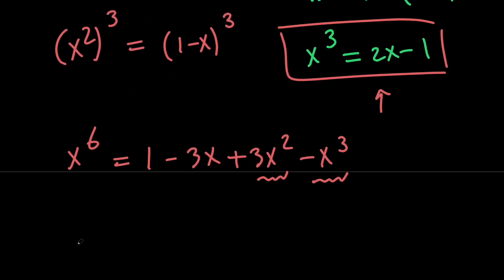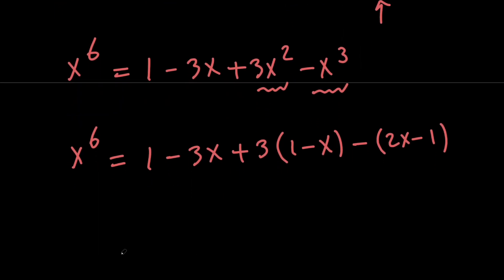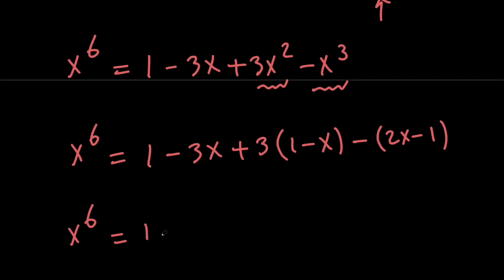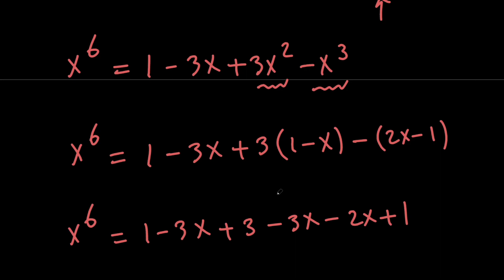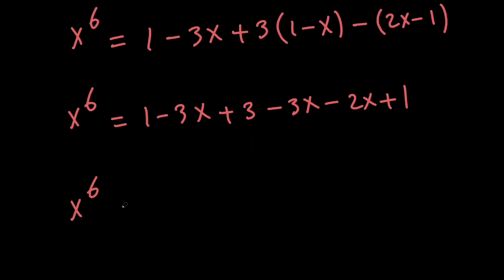So, x to the power of 6 equals 1 minus 3x plus 3 times the quantity 1 minus x minus the quantity 2x minus 1. This simplifies to 1 minus 3x plus 3 minus 3x minus 2x plus 1. Combining like terms, we get x to the power of 6 equals 5 minus 8x.